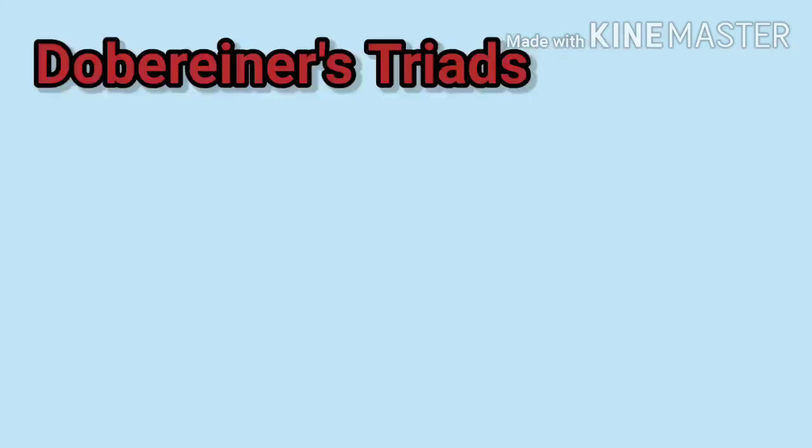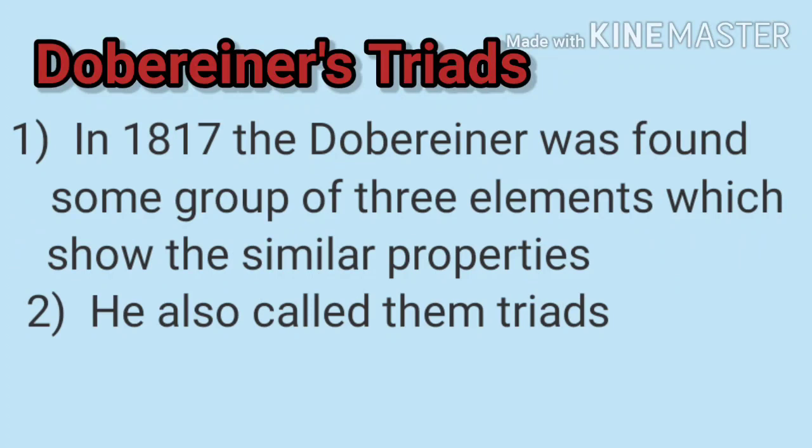Dobereiner's Triads: First, in 1817, Dobereiner found some groups of three elements which show similar properties. He called them triads. In these triads, he found that the elements in a group had certain similarities in their properties.